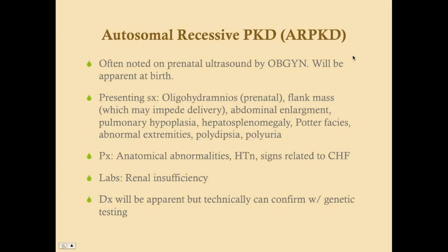Autosomal recessive polycystic kidney disease is distinct in that it will be noted almost universally on prenatal ultrasound by the OB/GYN and will definitely be apparent at birth. On ultrasound you're going to see oligohydramnios and possibly a flank mass in the fetus that could impede delivery. In the neonate you can see abdominal enlargement, pulmonary hypoplasia, hepatosplenomegaly, Potter facies, abnormal extremities, polydipsia, and polyuria.